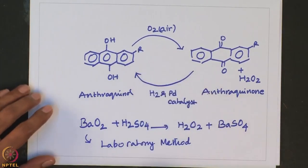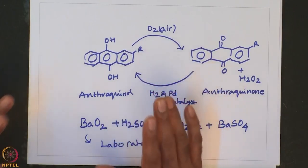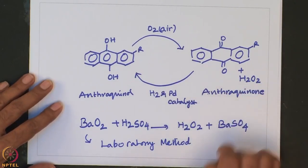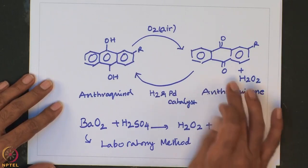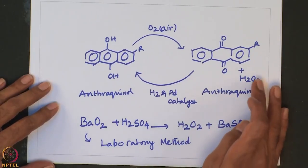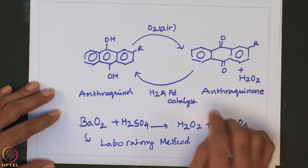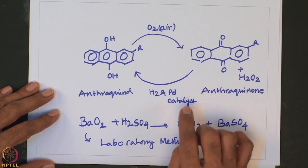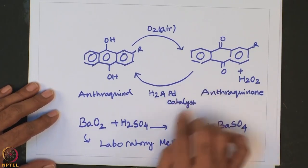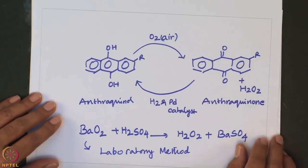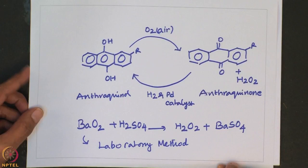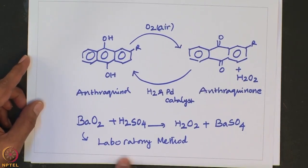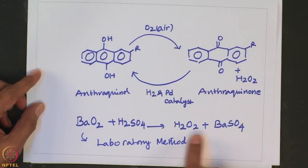When treated with water H2O2 comes into water and that can be separated from organic layer. To convert this quinone back into the anthraquinone one should use hydrogen and a palladium catalyst as reducing agent. This can be repeated several times to produce H2O2. Laboratory method involves simple interaction of barium peroxide with sulfuric acid.